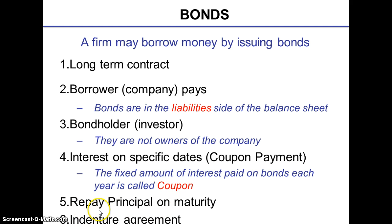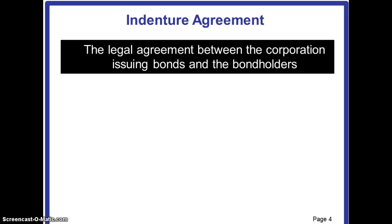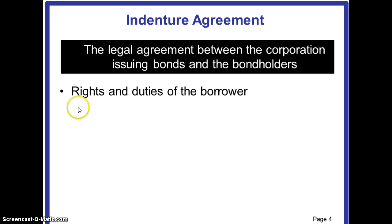The principal amount of the bond is repaid on maturity. A bond has an indenture agreement. An indenture agreement spells out the rights and duties of the borrower, and it is considered a legal agreement between the corporation which issues the bonds and the bond holders. An indenture agreement will specify the rights and duties of the borrower.